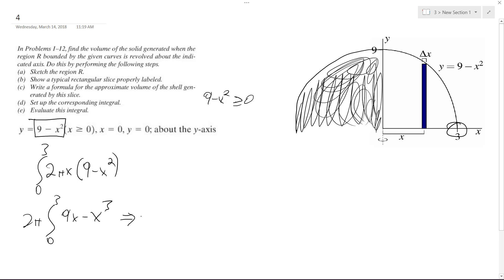and then we end up with 2 pi, integrated, this becomes 9x squared over 2 minus x to the fourth over 4, yuck,